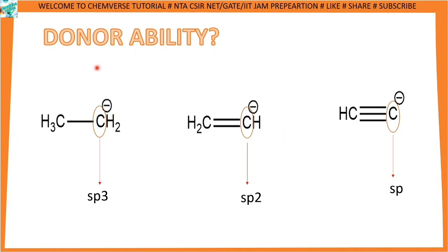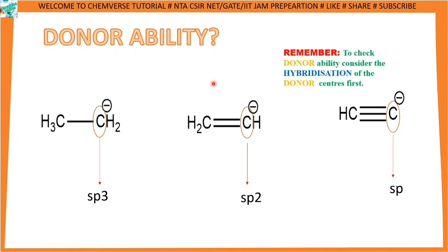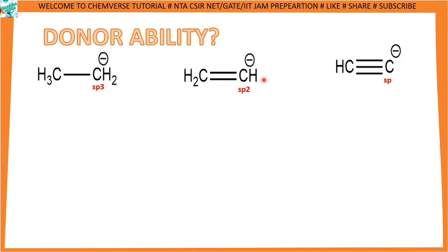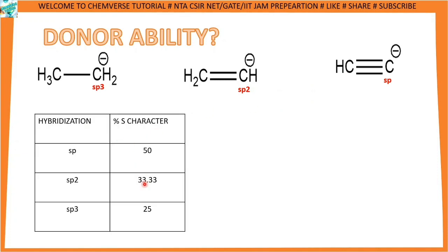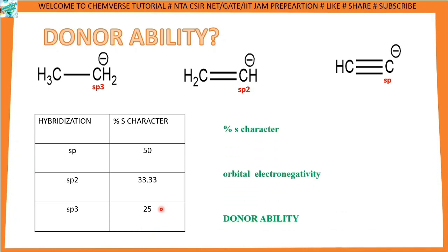Whenever a question about donor ability comes, we need to check the donor center and its hybridization first. Tip number one: to check donor ability, consider the hybridization of the donor center first. Now let's look at the percent s-character. For sp hybridization, the percentage s-character is 50%; for sp2, it is 33.33%; and for sp3, it is 25%.